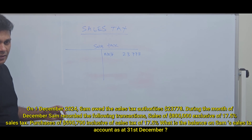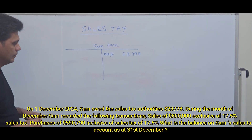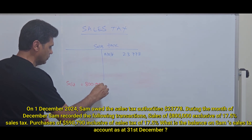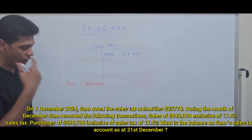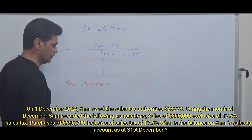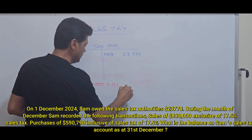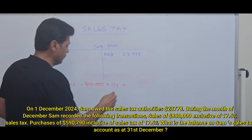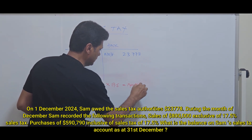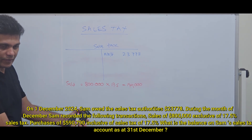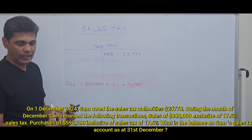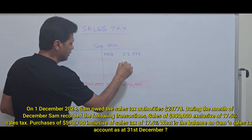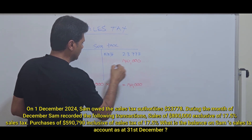During the period, the sales value is $800,000, which is excluding tax. The sales tax rate is 17.5%. So the tax portion is $140,000. This $140,000 is payable to the tax authorities — we are collecting it from the final consumers of the goods and it will be remitted to the tax authority. So it's a liability. $140,000 will be credited to the sales tax account on sales.